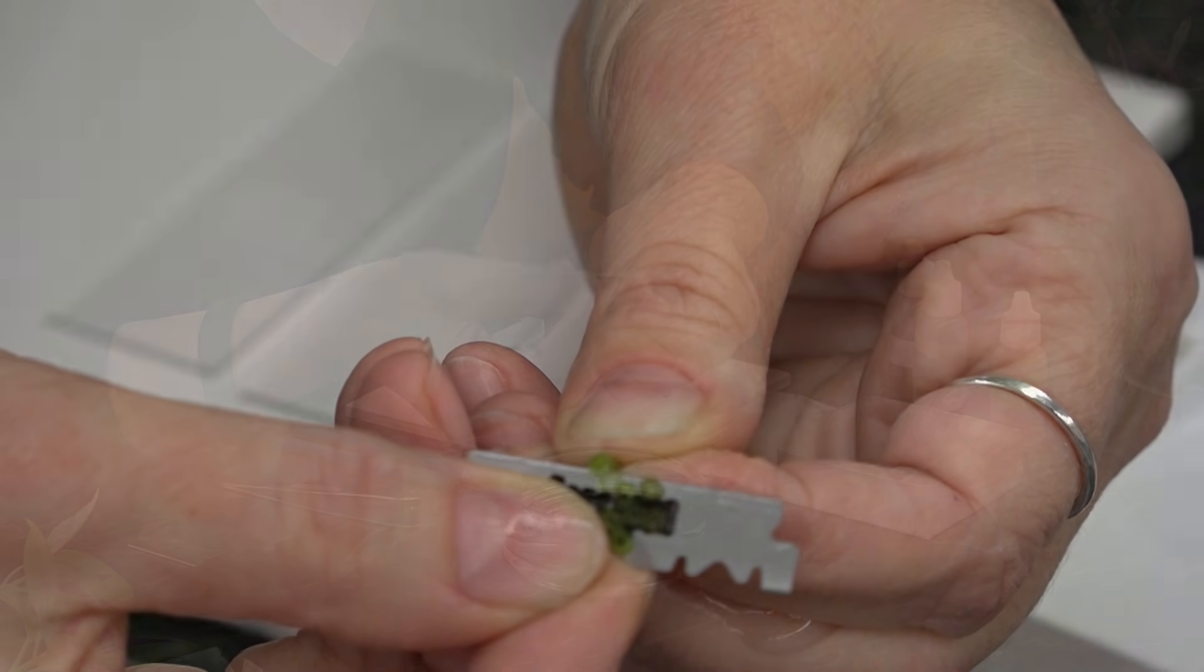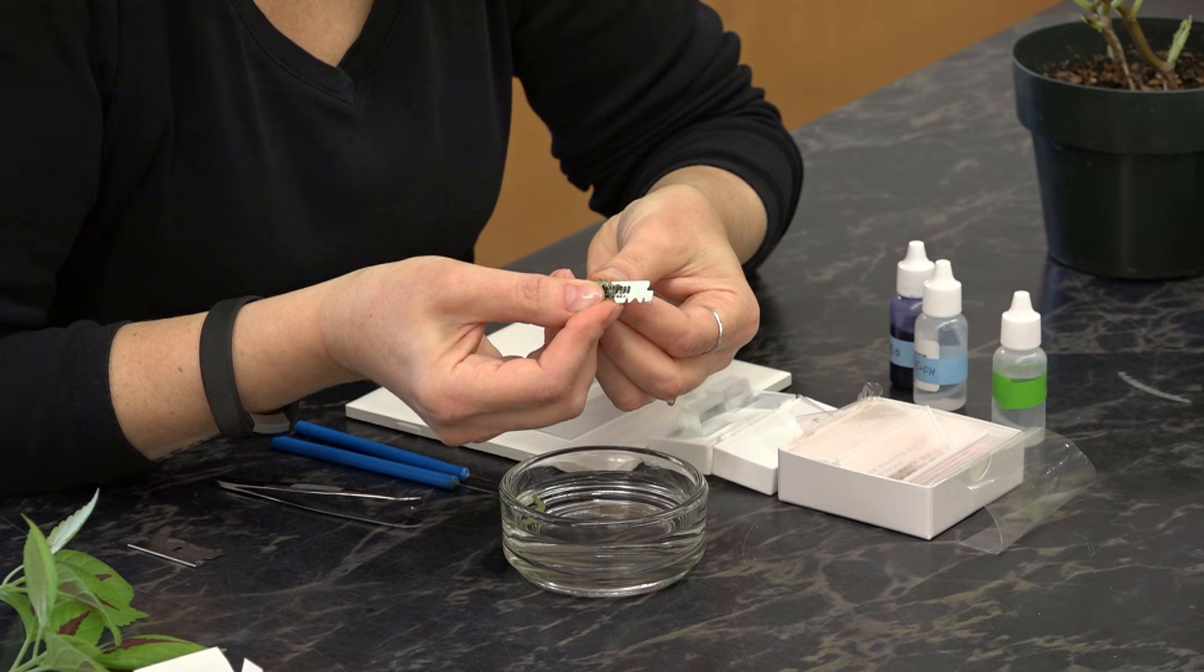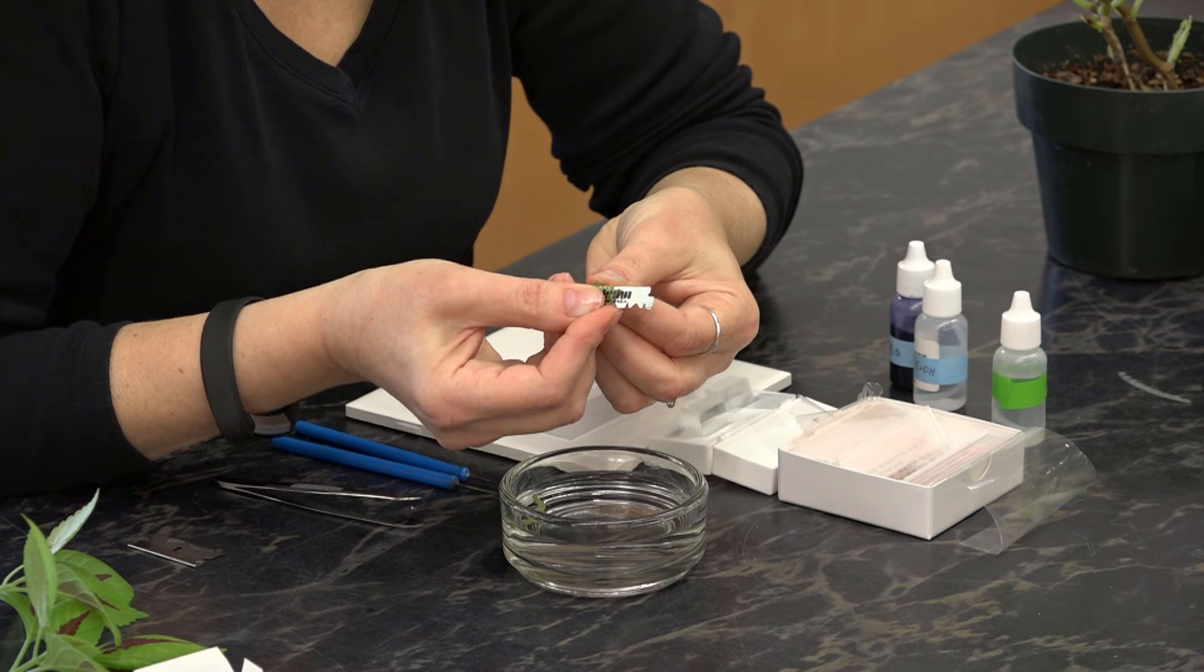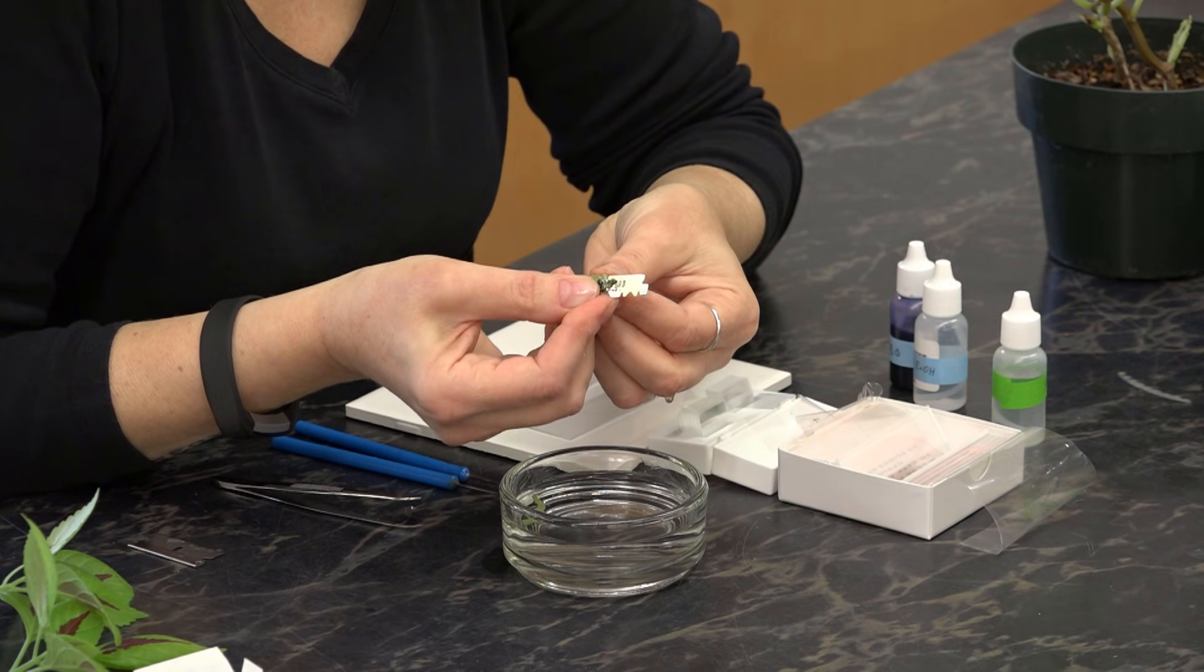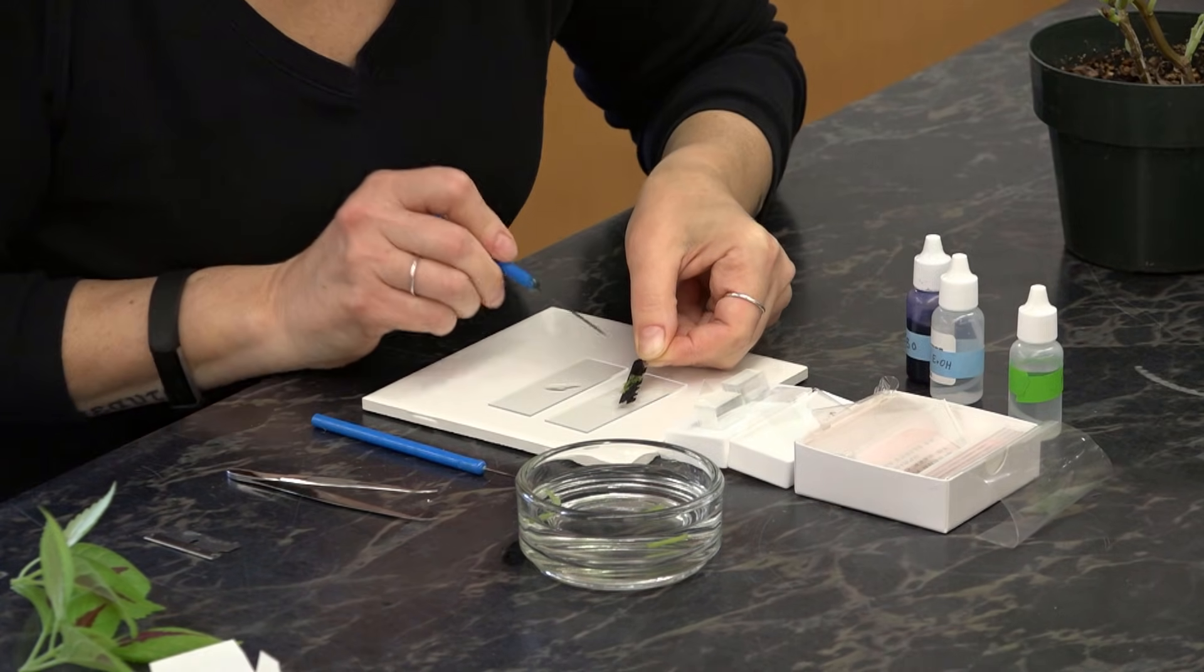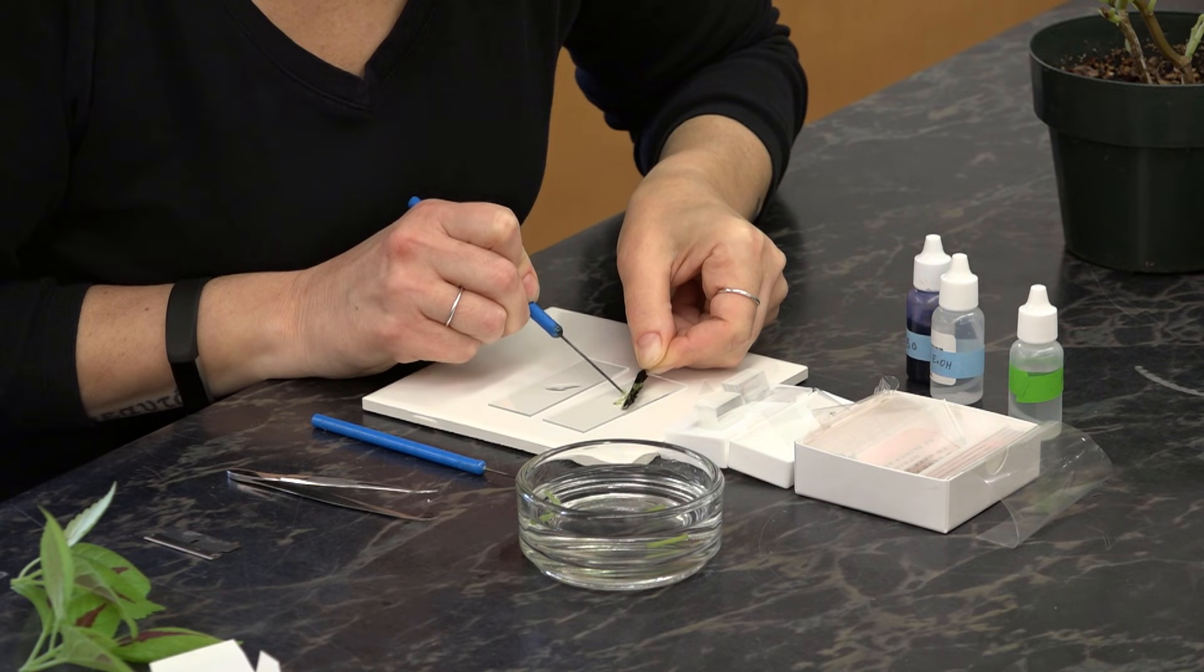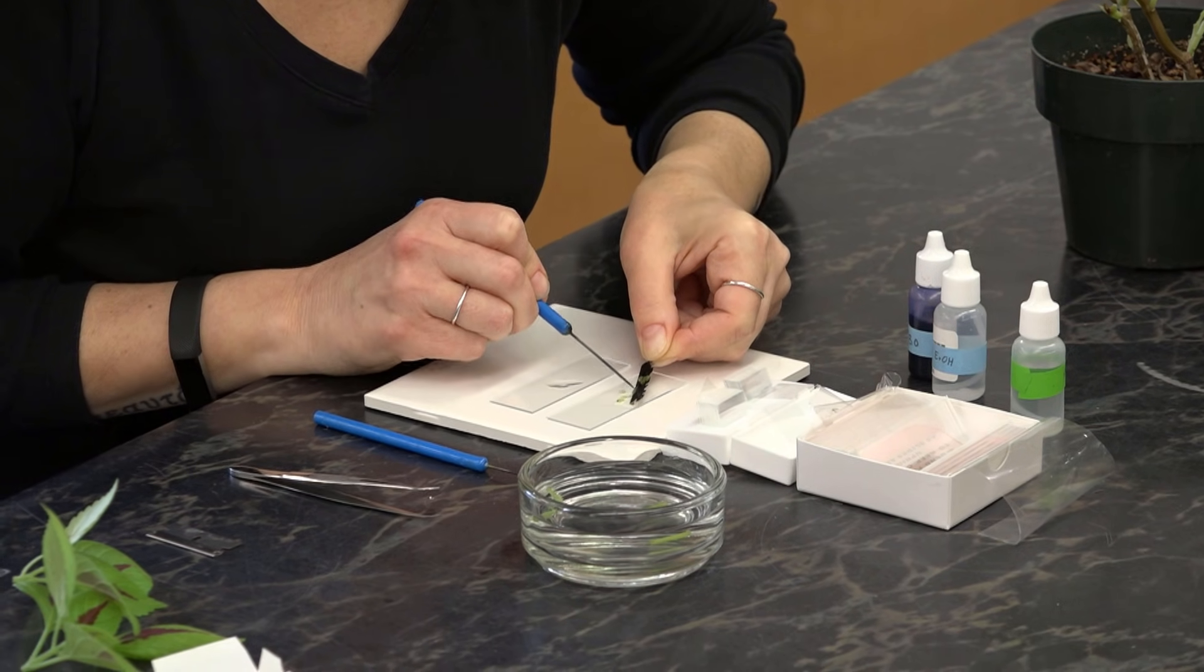As you're drawing it through, let them accumulate along the edge of the blade until you feel that you have quite a few sections there. Now take your dissecting needle and transfer your sections onto your slide.